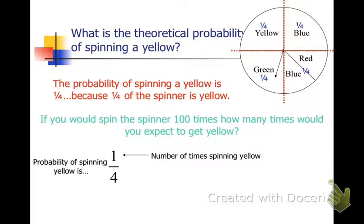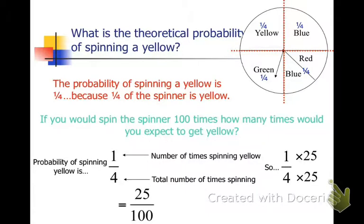You could just look simply at what probability means. It's the number of favorable outcomes, which is one out of four times of spinning. So if we spin 100 times, we know that we had to multiply one and four by 25 to get that 25 out of 100 times.